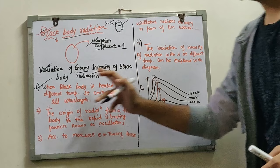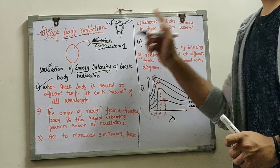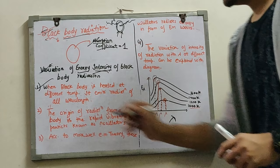Now let's see the first point. When a black body is heated at different temperatures, it emits radiation of all wavelengths. If this is a black body and I am heating it, then the radiation which will be released will be released from each wavelength. What does it mean from each wavelength? It will be explained in the diagram.